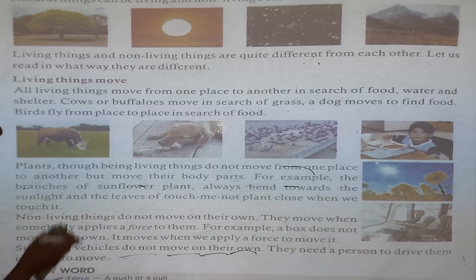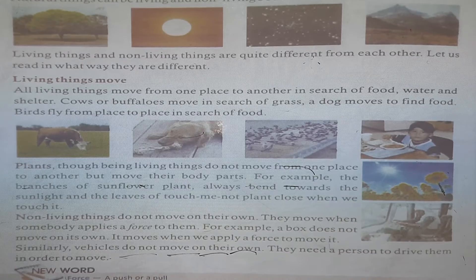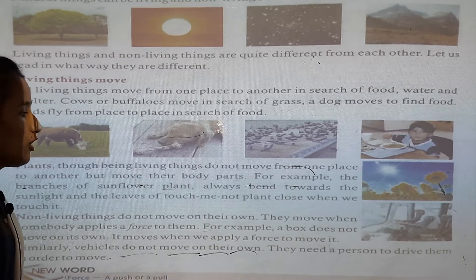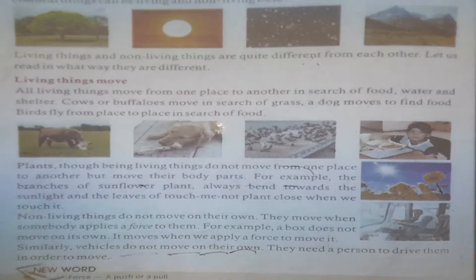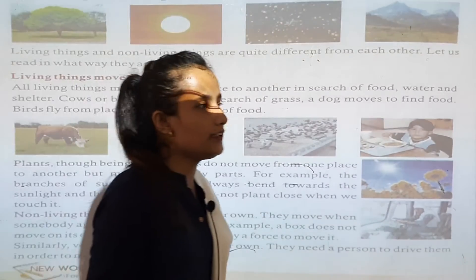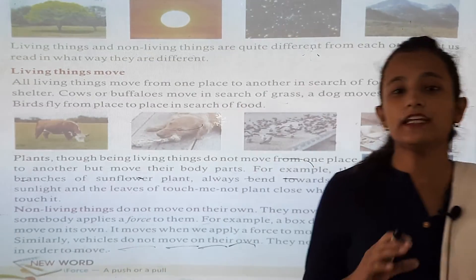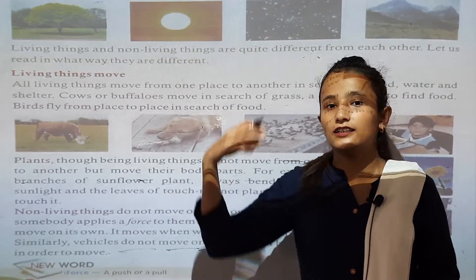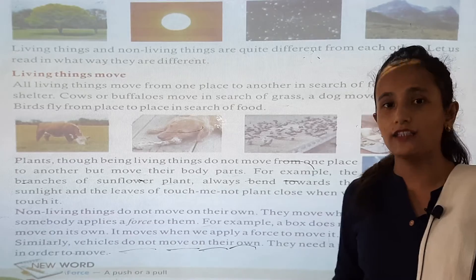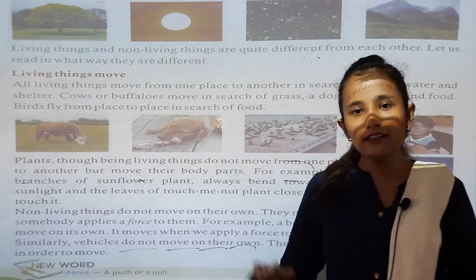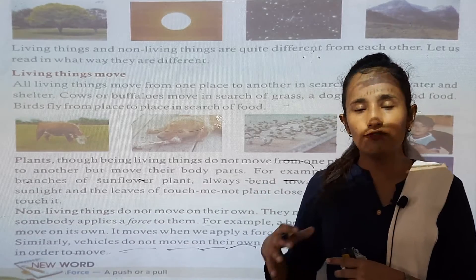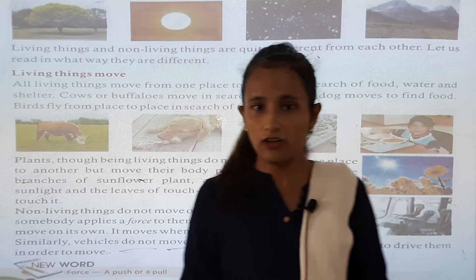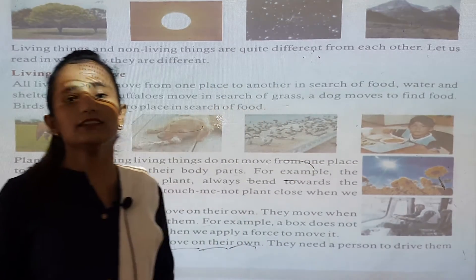Non-living things do not move on their own. They move when somebody applies a force to them. Non-living things cannot move, cannot breathe, cannot take sunlight, and cannot take water. But plants and animals are living things — their habits and their foods are different. Non-living things cannot take anything.